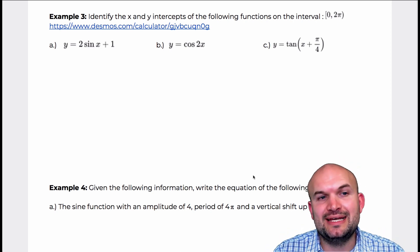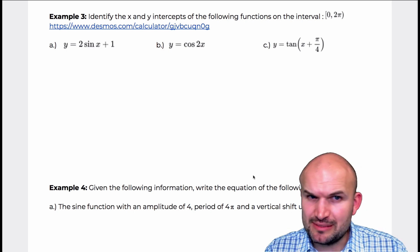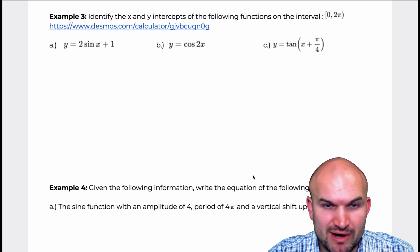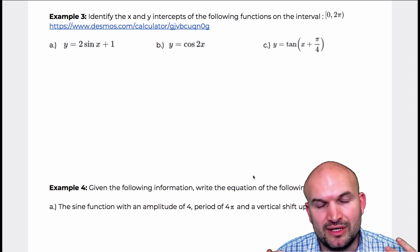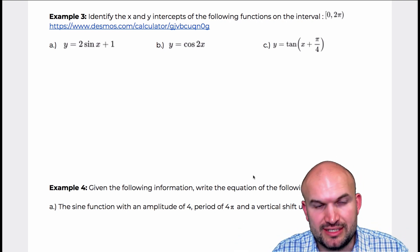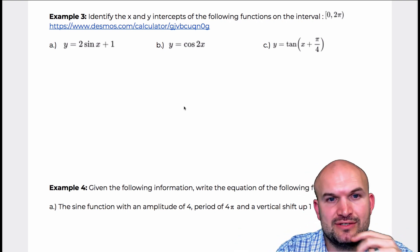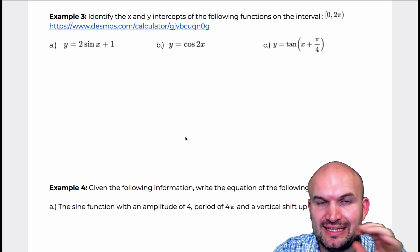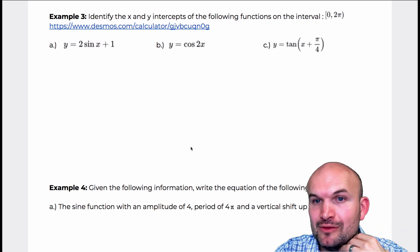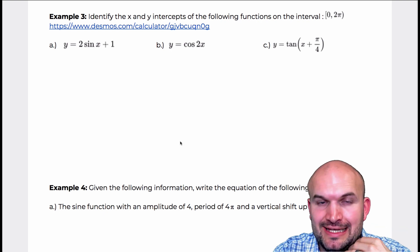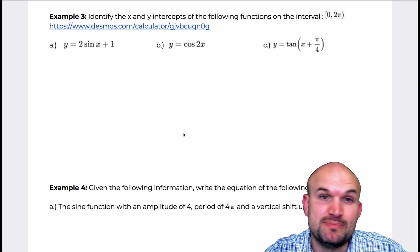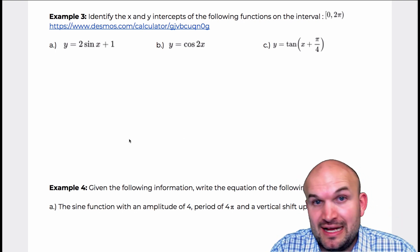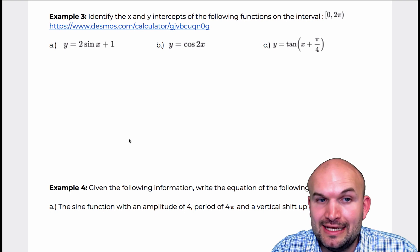So what I'd like to do is something a little bit different on this one. We're still talking about graphing, and in graphing we're looking at the characteristics. One of the characteristics we haven't talked about is identifying the x and y intercepts of the following functions on the interval. This goes back to exactly what we've talked about in our functions unit — identifying x and y intercepts.